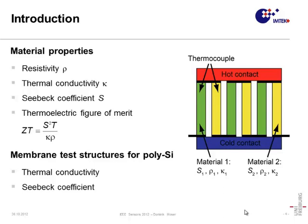Let us consider a thermoelectric generator, as shown schematically on the right, as an example. Its efficiency is essentially determined by three material parameters. The first is the resistivity — a low resistivity guarantees a low inner resistance and thus minimizes Joule heating. The second is the thermal conductivity — a low thermal conductivity is desirable to keep up a temperature gradient along the device. The third is the Seebeck coefficient — a high Seebeck coefficient is desirable for high output voltages.